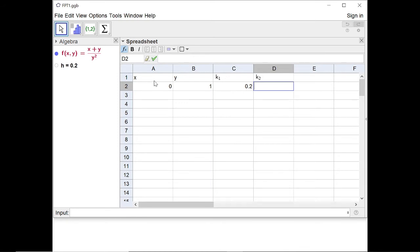So that's going to be h times f of xₙ plus h. So that's A2 plus h and then yₙ plus k₁. So that's B2 plus C2.